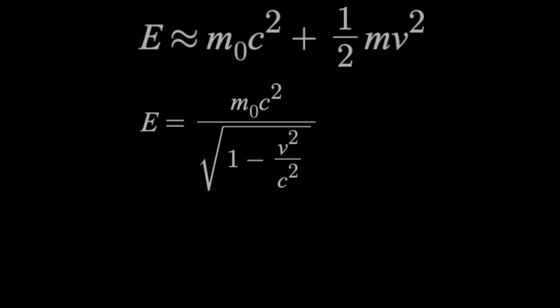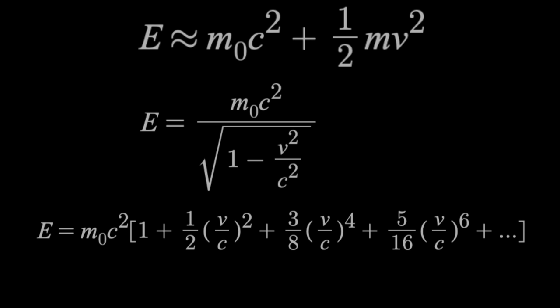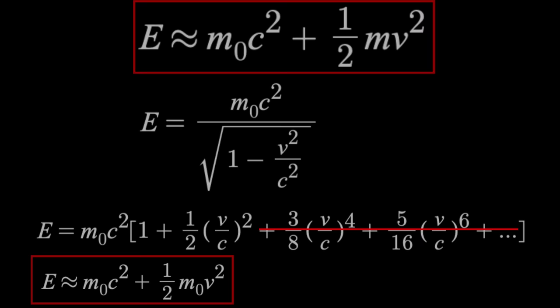Now if we expand this into a McLaurin series, treating v/c as a single variable, then we get this here. At low speeds, we can ignore all of these terms, because the speed of light c is so much larger than v. And after distributing the m₀c², we get this here, our low speed energy approximation. So these Taylor and McLaurin series can help us see some approximations that aren't obvious from the original equation.